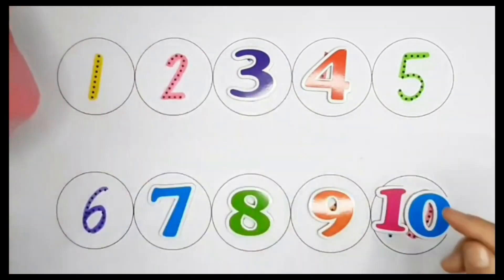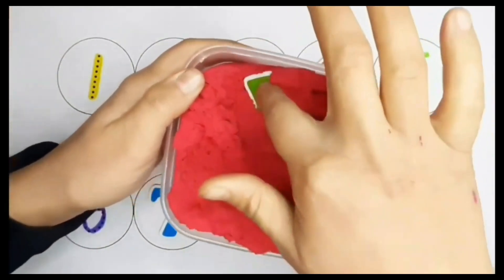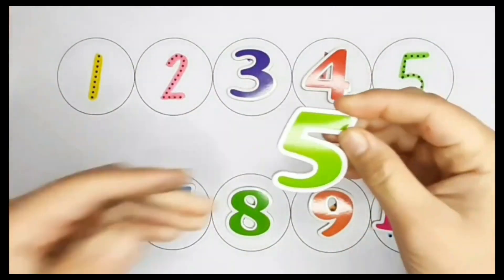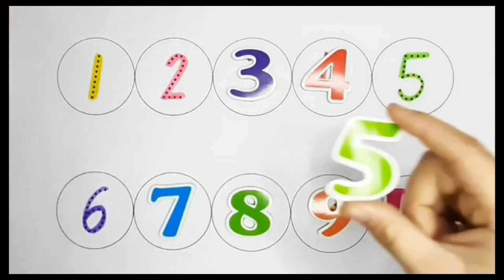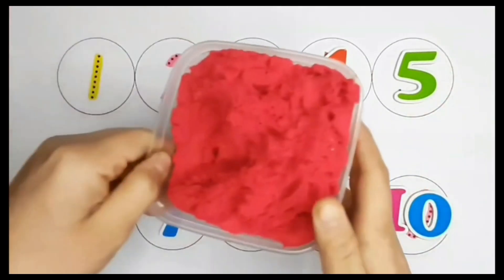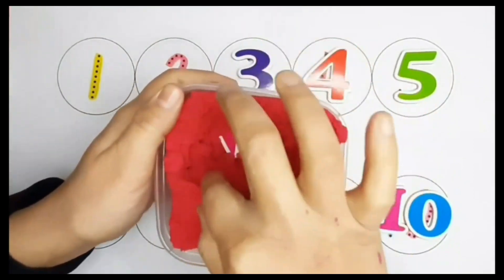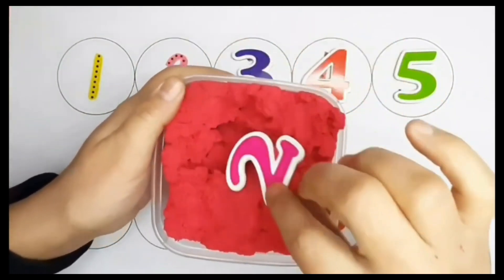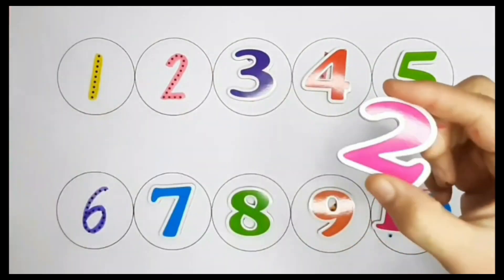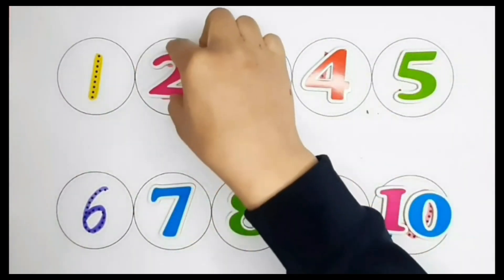Let's see what number is hidden in scents. It's number 5. Can you help me to find it? It's number 2. Can you help me to find number 2? Yes, that's right.